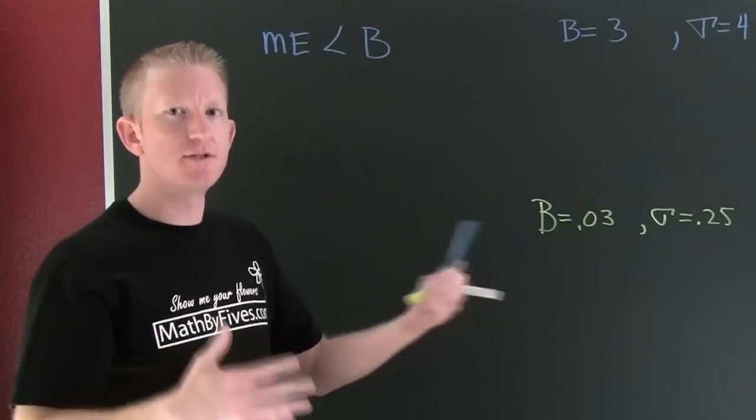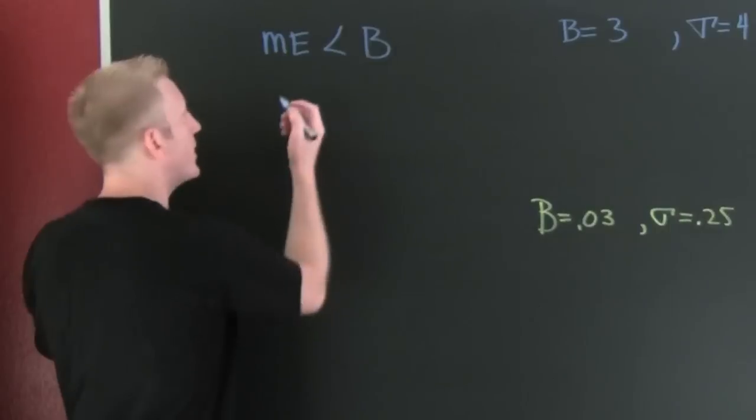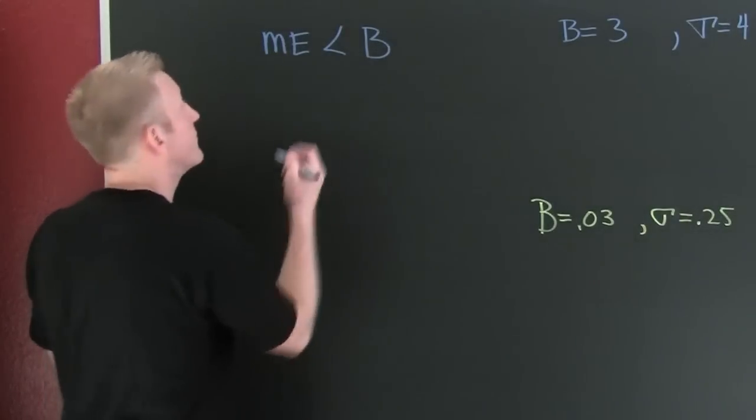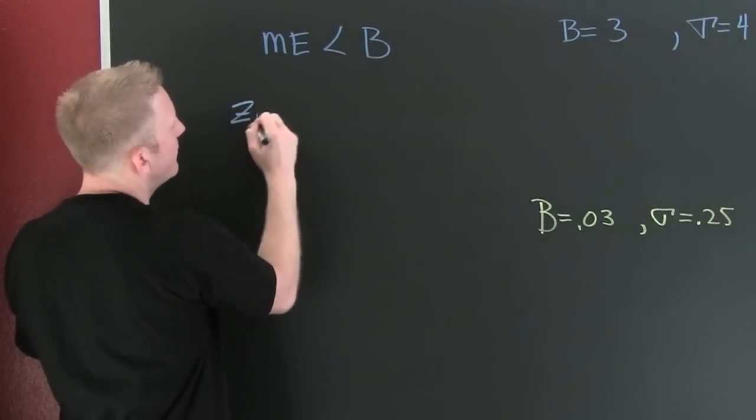Here our margin of error, I'm putting this up in general, because you can use this for any of your margins of error to find out your n. Let's just do it for the normal distribution for now. My margin of error is my z alpha over 2 times my standard deviation.